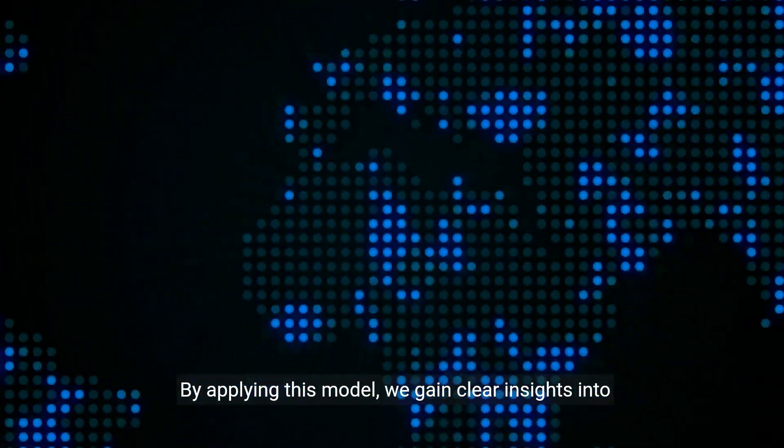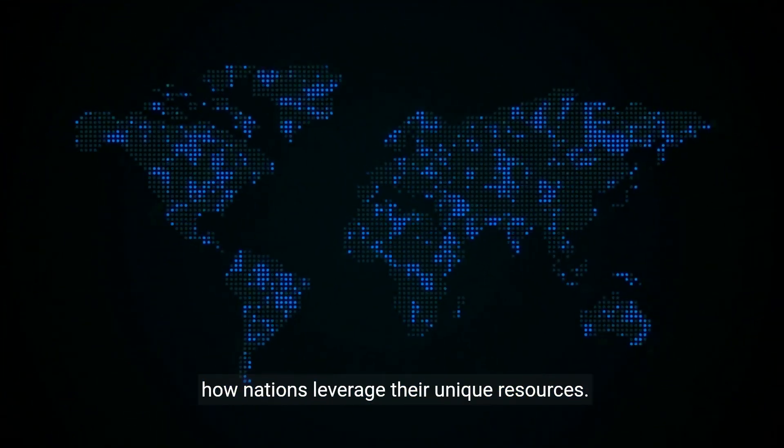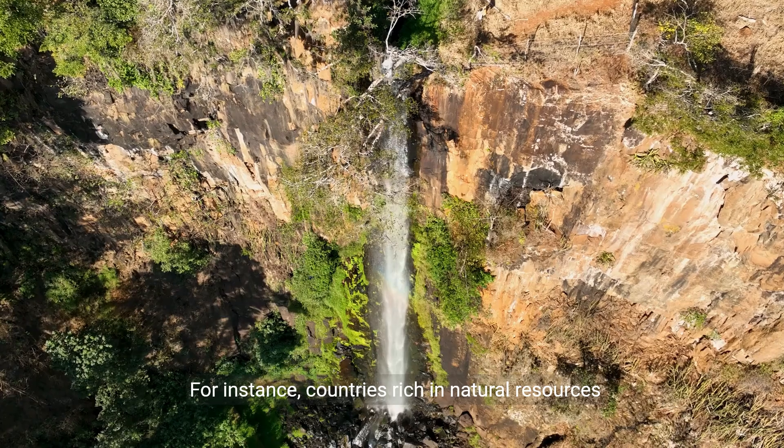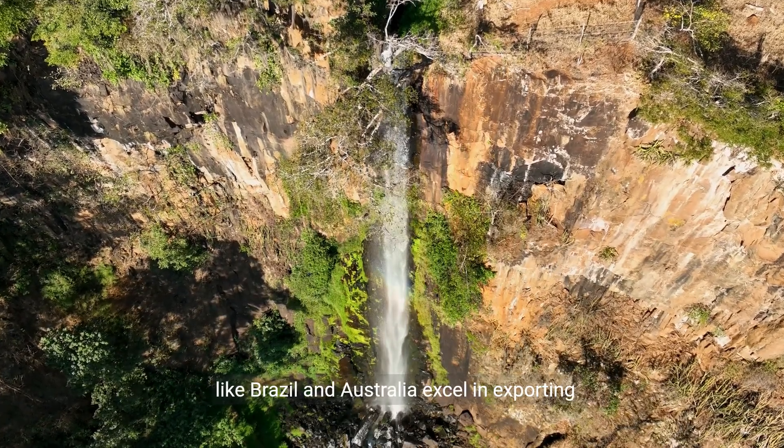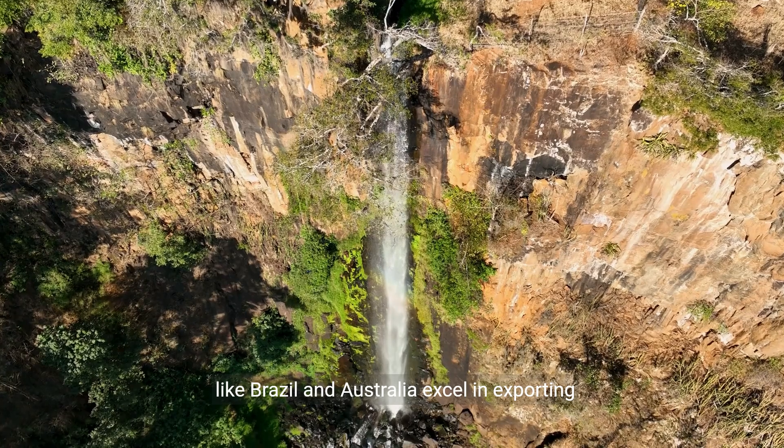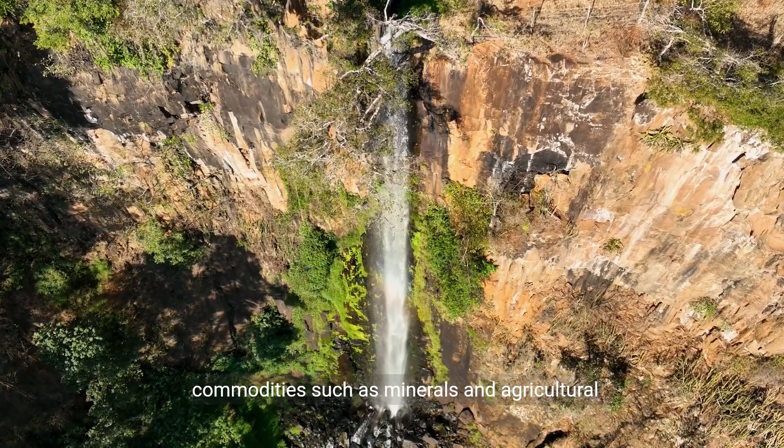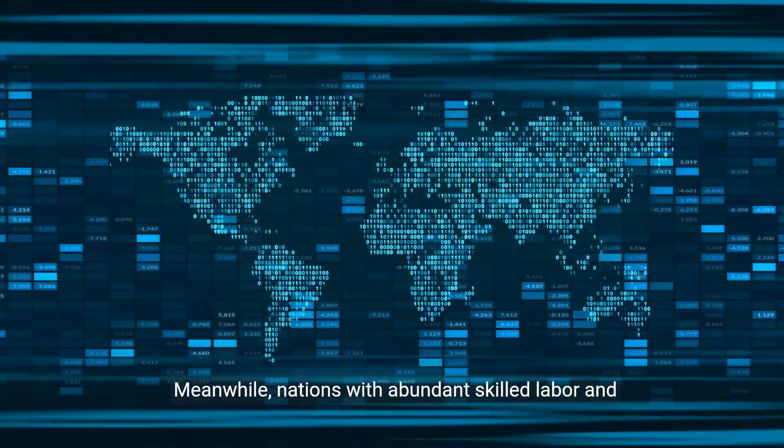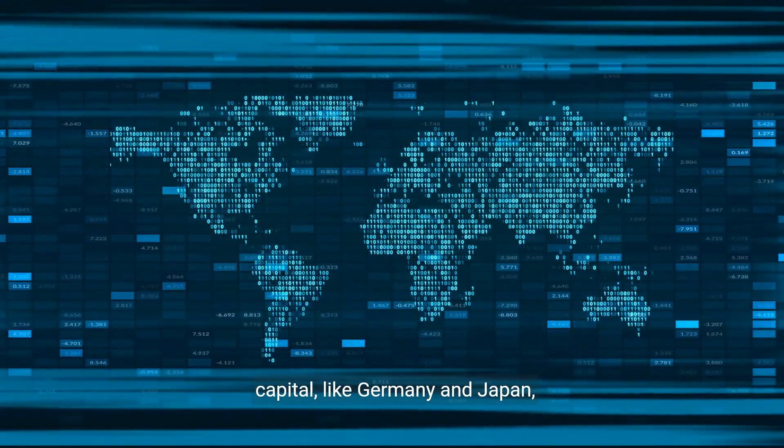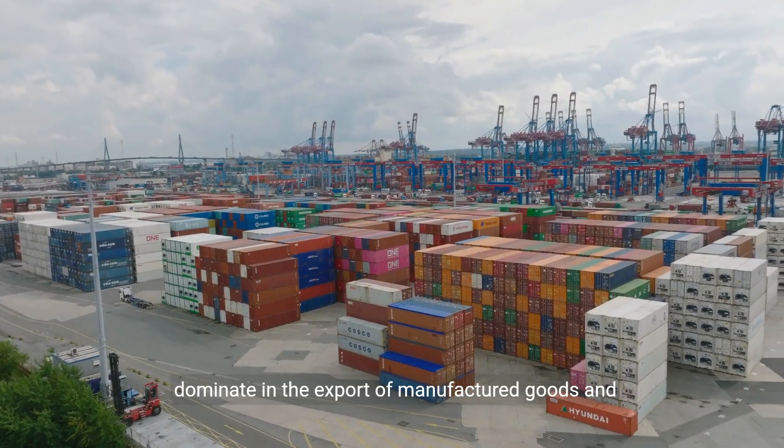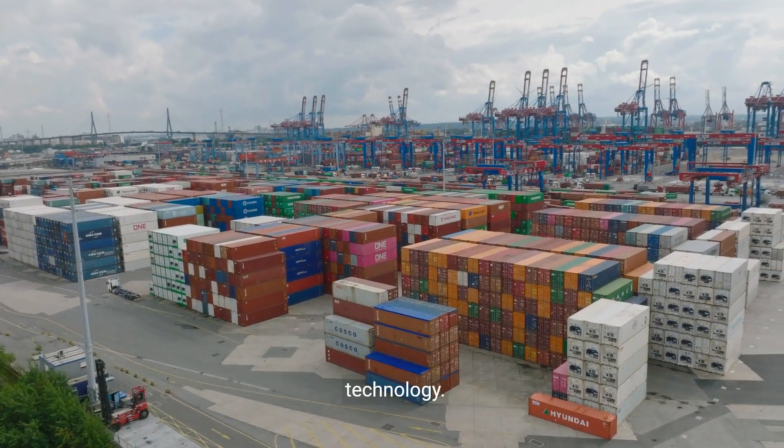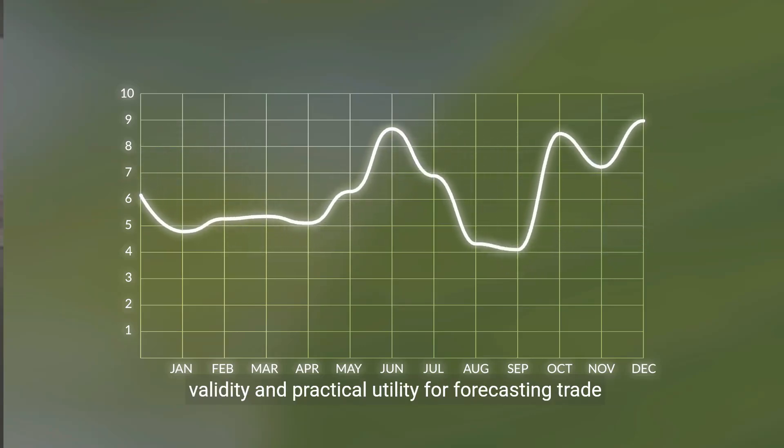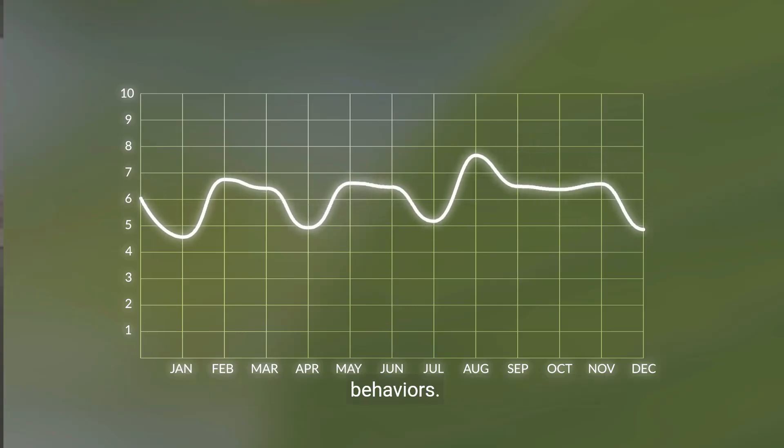By applying this model, we gain clear insights into how nations leverage their unique resources. For instance, countries rich in natural resources like Brazil and Australia excel in exporting commodities such as minerals and agricultural products. Meanwhile, nations with abundant skilled labor and capital, like Germany and Japan, dominate in the export of manufactured goods and technology.